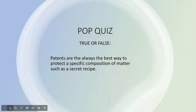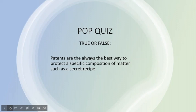It's time for another pop quiz. True or false: patents are always the best way to protect a specific composition of matter, such as a secret recipe. False. For example, a secret recipe might be protectable by a patent, but it is also likely eligible for trade secret protection. For a secret recipe that is very hard to reverse engineer or replicate, a trade secret would offer longer protection than a patent.